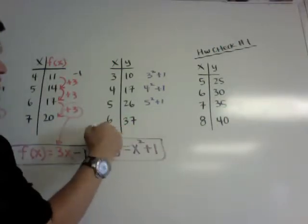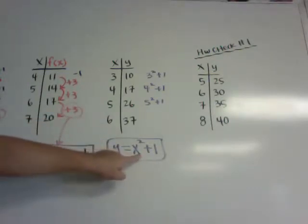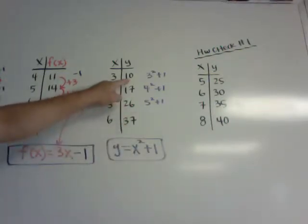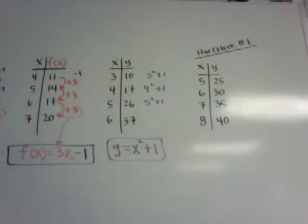Because again, this is my x's. The 3, 4, 5, 6 is my x's. So if I went 3 squared is 9 plus 1, you get the 10. 4 squared is 16 plus 1, you get the 17. So you can see that.